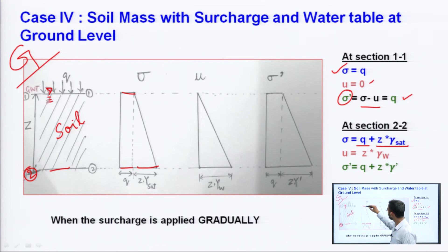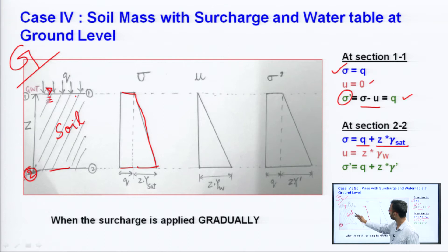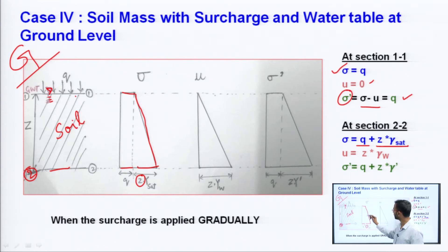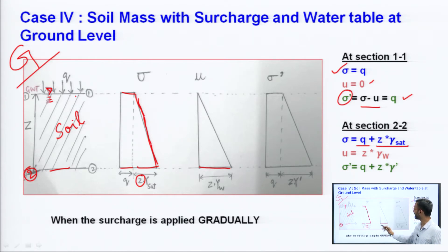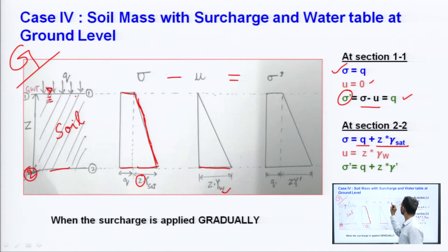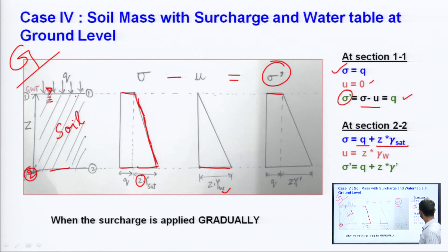The pore water pressure at section 2-2 is z × γ_w, due to the water present in the soil mass of height z. Subtracting gives effective stress σ' = Q + z × γ' (gamma submerged). So at section 1-1 effective stress is Q, and at section 2-2 it is Q + z × γ_dash.